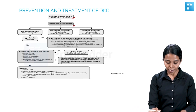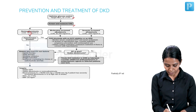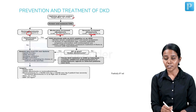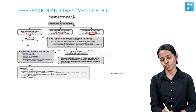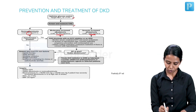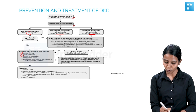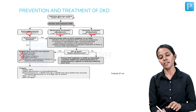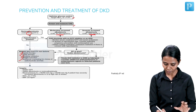We have to screen and measure the urinary albumin excretion. It can be less than 30, it can be 30 to 300, it can be more than 300. If it is normal albuminuria — that is less than 30 — see if hypertension is present. If hypertension is not present: aspirin, statin, cessation of smoking, weight reduction, and nutritional counseling. These are the general things that are done for any diabetic patient.